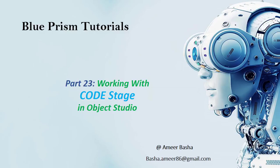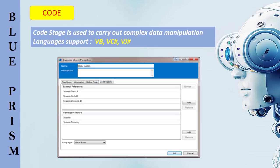Hi, welcome to BluePrism tutorials. My name is Amit. This is part 23, working with the Code stage in Object Studio. In this session we will learn how to work with the Code stage. Code stage is available in objects only — it is not available in processes. Code stage is used to carry out complex data manipulations and allows Microsoft .NET code scripts, supporting VB, C#, and J#.